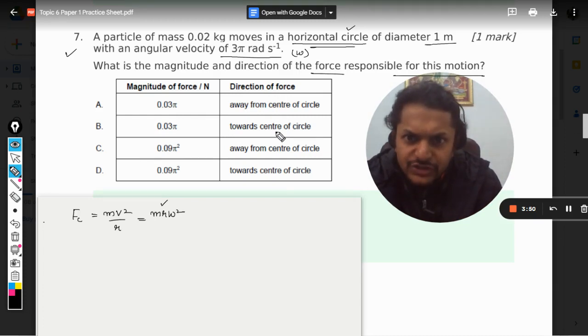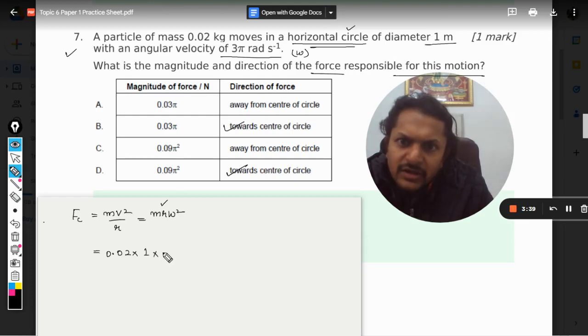So the direction of the force is towards the center, and we need to find the magnitude. What is the magnitude? 0.02 kg, and the radius is 1 meter, omega is 3 pi square. So it becomes 0.02 into 9 pi square.